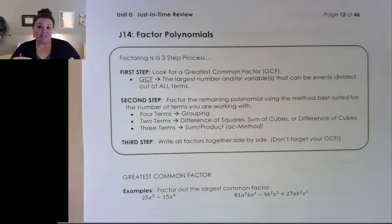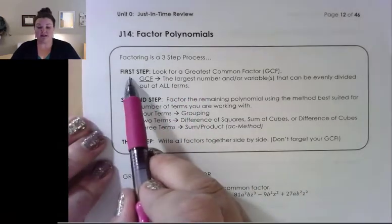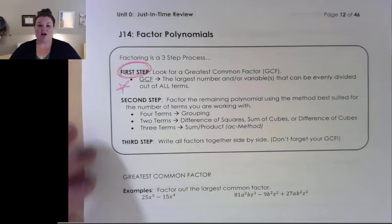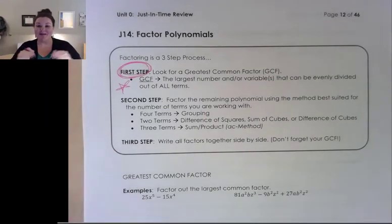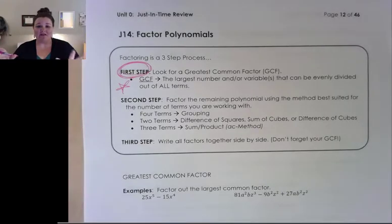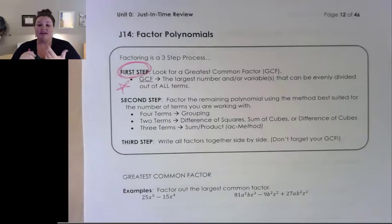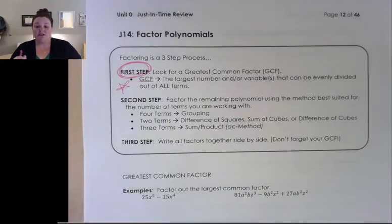There are a whole bunch of different types of factoring we're going to go over. For this section, we're just going to focus on our first step, which is always, always, always to look for a greatest common factor. Any time you start factoring, before you look at the number of terms or care about anything else, you want to see if there is something that all the terms have in common — are they all divisible by a number? Do they all have the same variable?